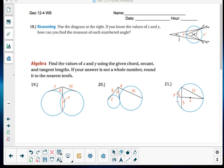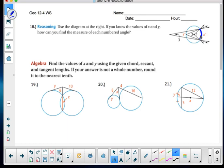Okay, this is part two of 12-4 Solutions, and we're looking at reasoning using the diagram at the right. If you know the values of x and y, how can you find the measures of each numbered angle? Well, the thing is, as I pull back from x, I know that angle 1 is bigger than angle 2. So the measure of angle 1 is bigger than the measure of angle 2, because if 1 is the same as x, and then angle 2 is half of x.